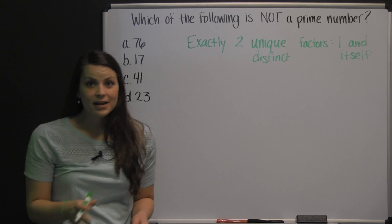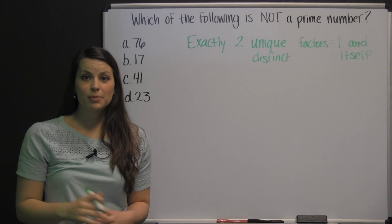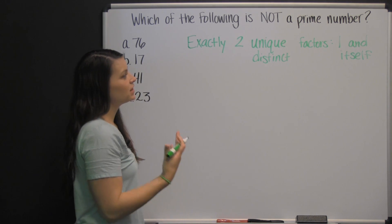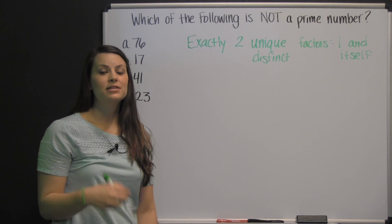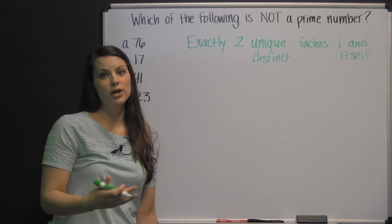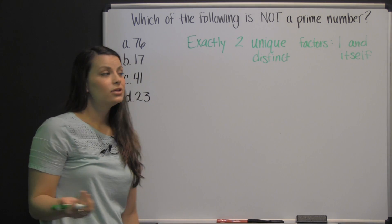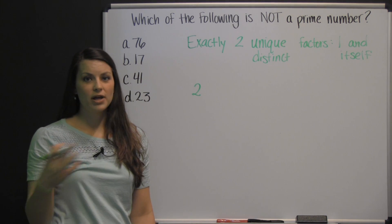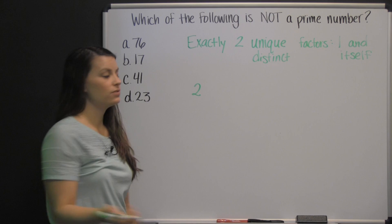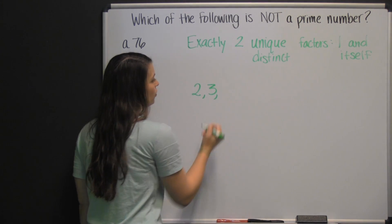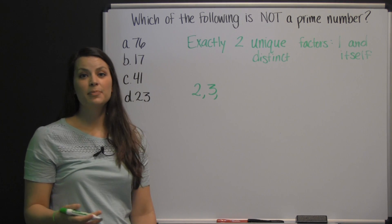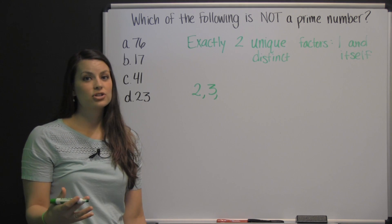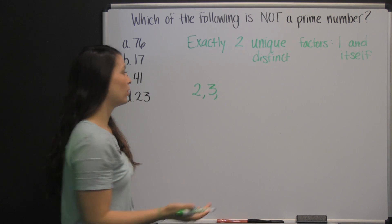There's a little bit of a debate about what the very first prime number is. Some people say it's one, but to me, one doesn't have two factors because the factors of one are just one. So I would say the first prime number is the number two, since the only factors of two are one and two. Then three. Four would not be prime, since besides one times four, there's also two times two. The three factors for the number four would be one, two, and four. So we skip four.